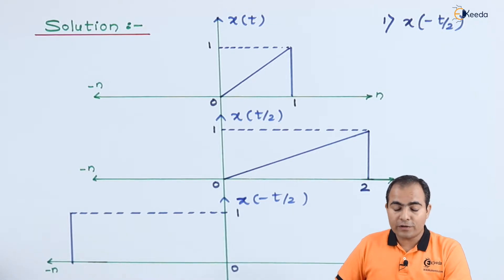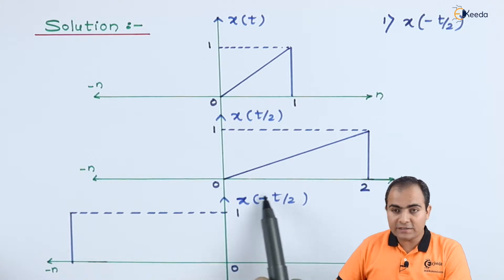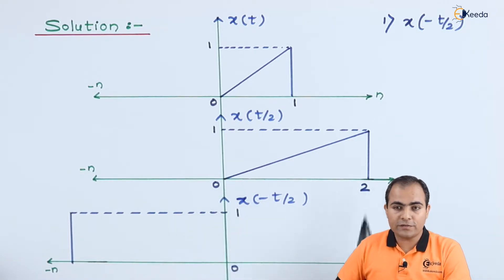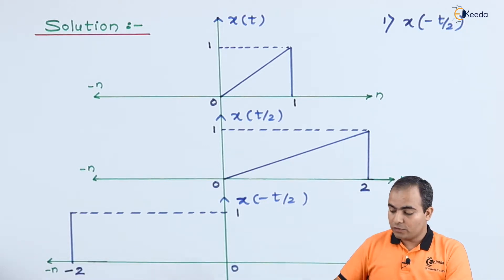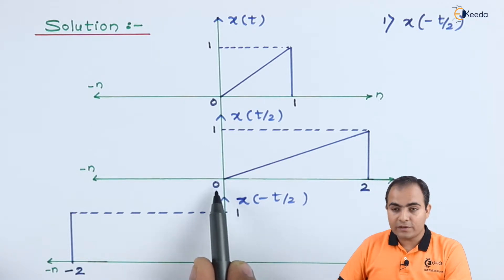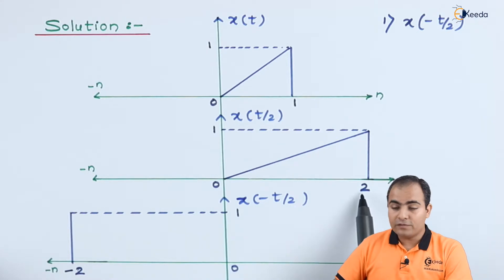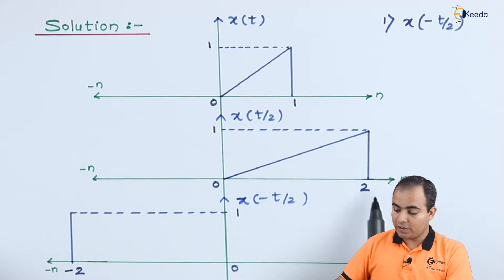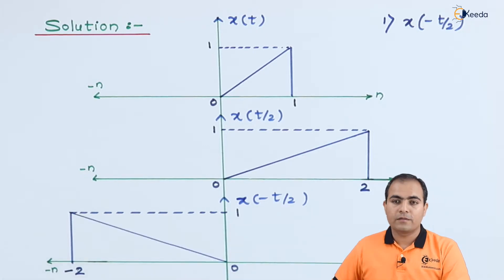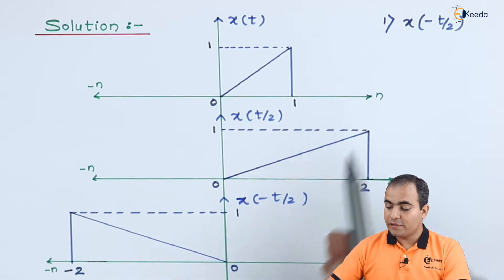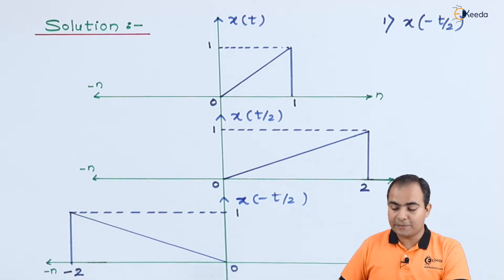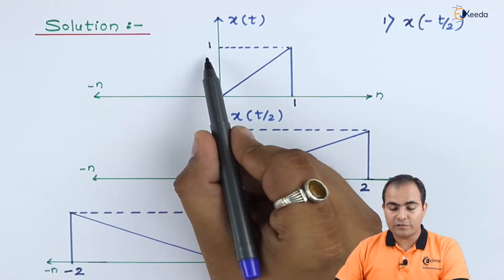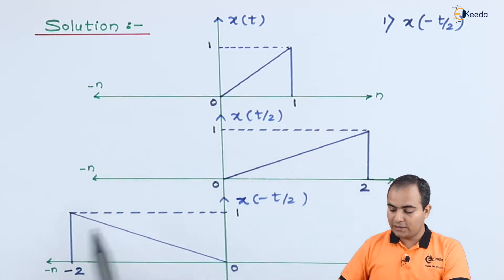To apply time reversal property, simply multiply minus 1 with each available instant of time. So 0 multiplied by minus 1 gives 0, and 2 multiplied by minus 1 gives minus 2. The graph which started at 0 will now start from minus 2. After applying time reversal, it will terminate at 0. Importantly, whenever we apply time shifting or time scaling property, amplitude will never change — it remains the same. In all three stages here, the total overall amplitude remains 1.